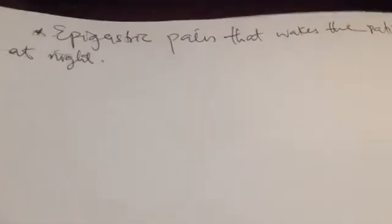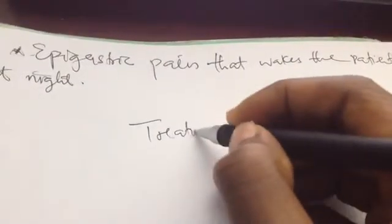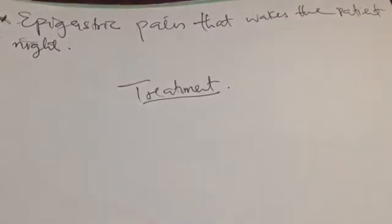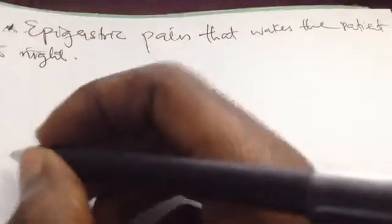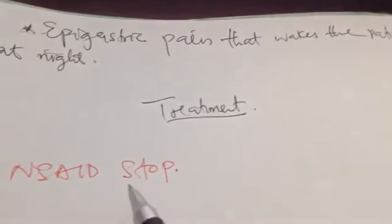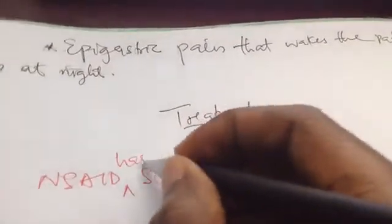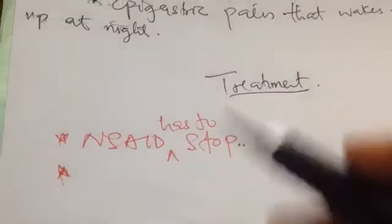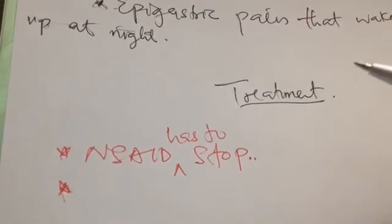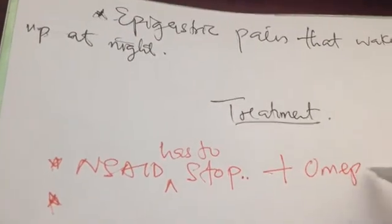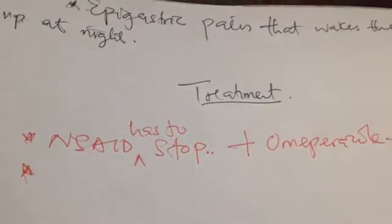Treatment: To treat any disease, you must eliminate the cause. If the ulcer is due to NSAIDs such as aspirin, you must stop the drug. If it is due to H. pylori, which is a bacterium, you must give antibiotics. Along with stopping NSAIDs, you also give omeprazole, which is a proton pump inhibitor (PPI).